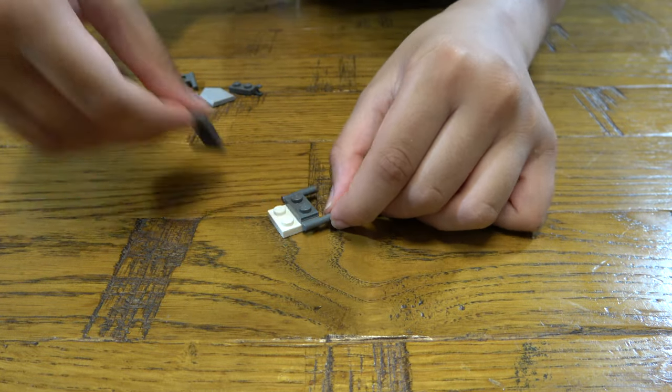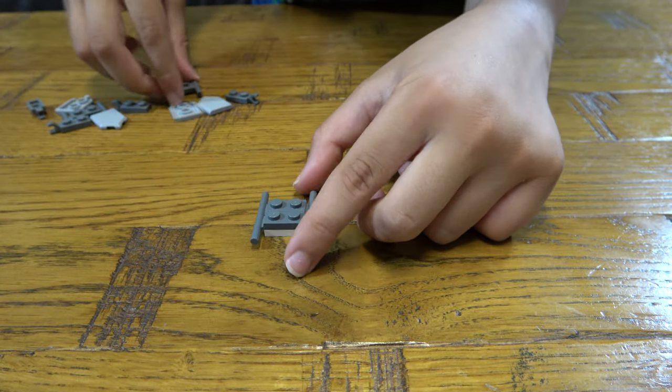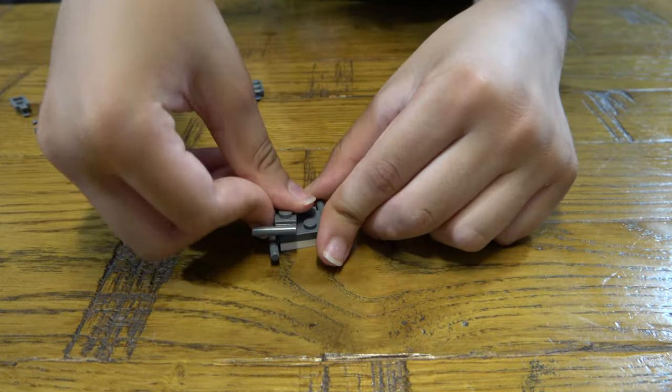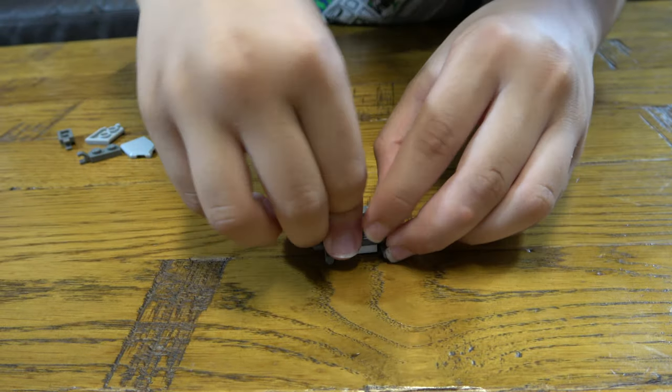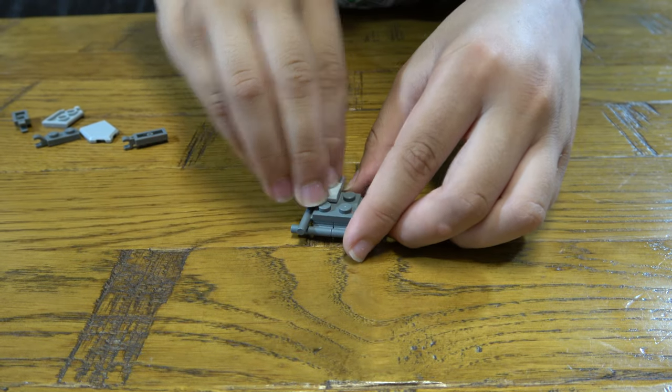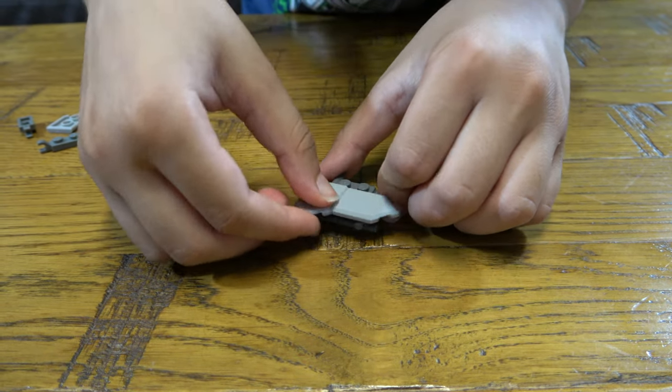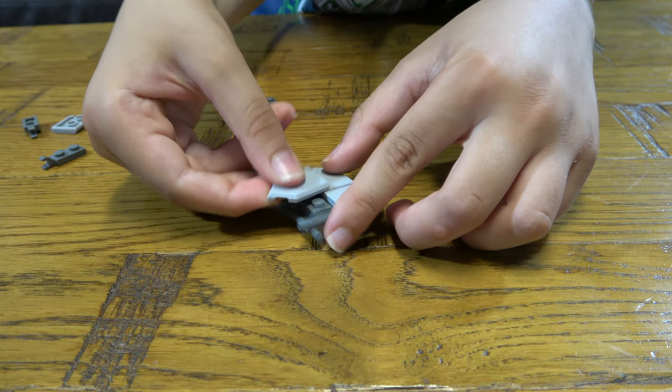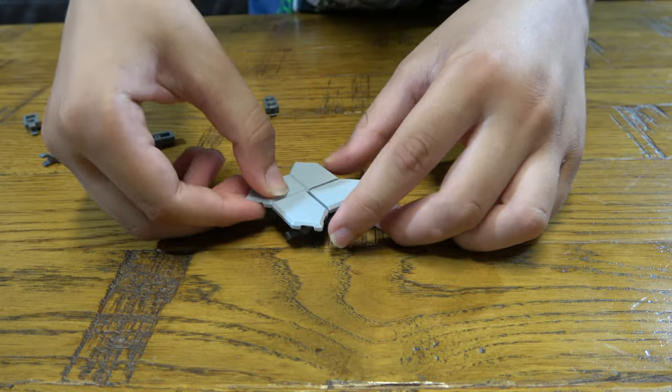I'm going to place that like that and then another two like that. And here is the bit where we place the ninja star. I'm going to put one like that, one like this, one like that, and one like that.